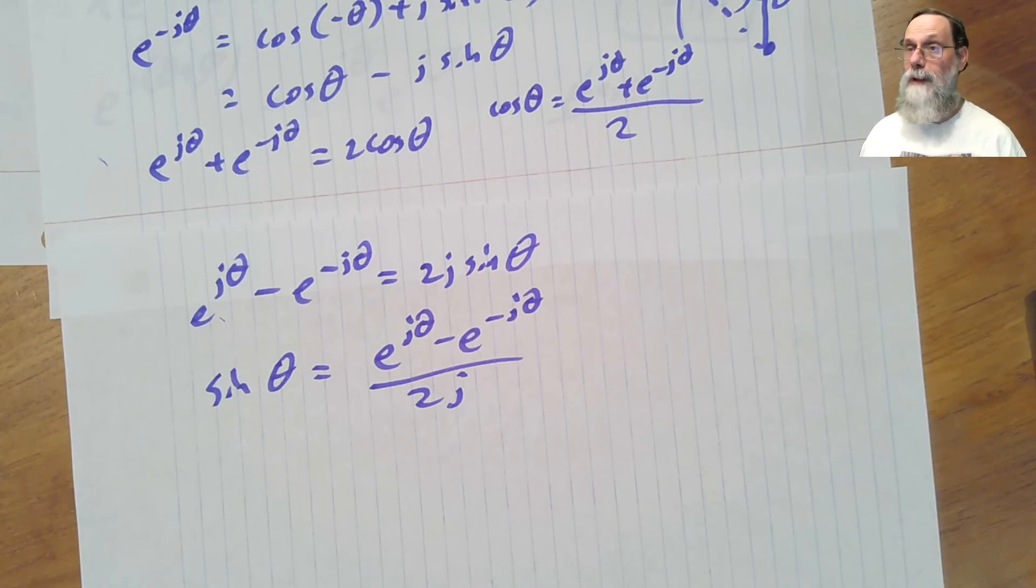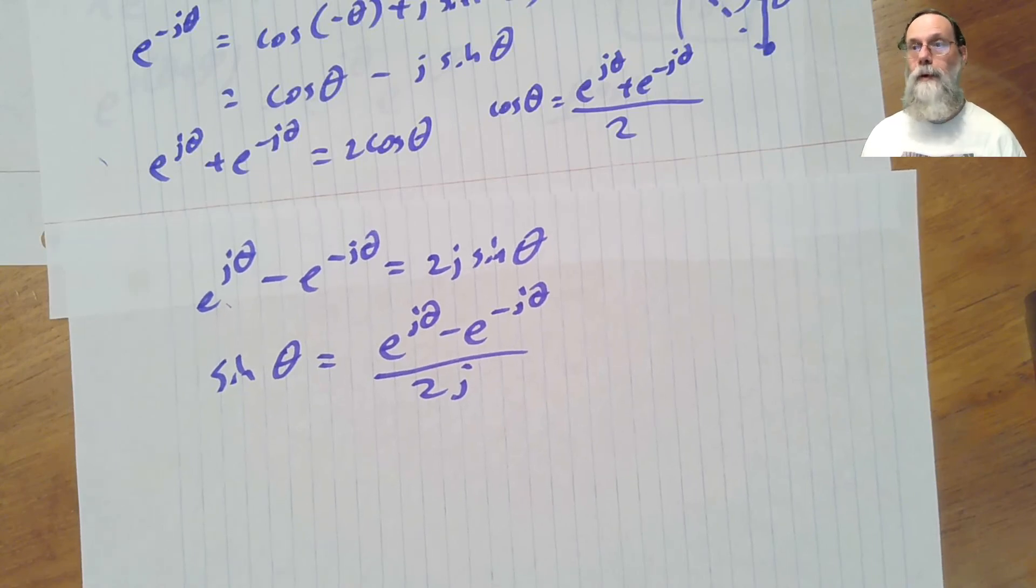And that turns out to make things very simple because exponentials have really nice properties when you have to take derivatives or integrate them. Exponentials e to the x is the nicest function for differentiating. And we'll look at that a little bit more when we do a review of differential calculus. That's probably all you really need to know about complex numbers for now. Practice with them a little bit so that you're comfortable with them. And we'll be using them a lot in this class.